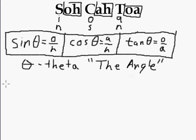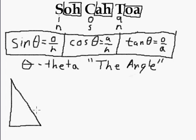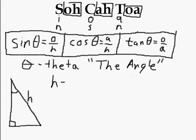Now, what are the other things — O, H, and A? I'm going to draw a quick triangle here. I have a triangle, and I'm going to draw a right angle, because remember SOH CAH TOA only works for right-angle triangles. The first side I'm going to label is H — H stands for the hypotenuse. You've already seen it in the Pythagorean theorem. The hypotenuse is the longest side of the right-angle triangle; it's always opposite to the right angle.